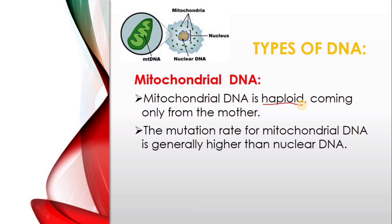Mitochondrial DNA is haploid, while nuclear DNA is diploid. Mitochondrial DNA comes only from the mother. The mutation rate for mitochondrial DNA is generally higher than that of nuclear DNA.